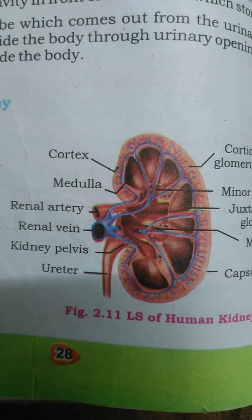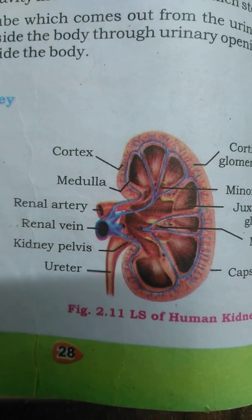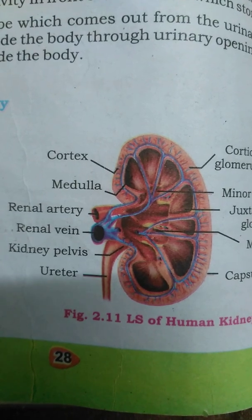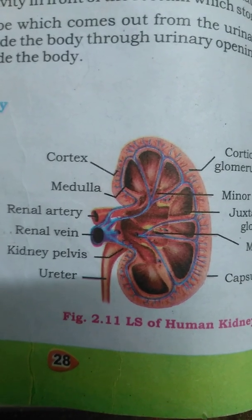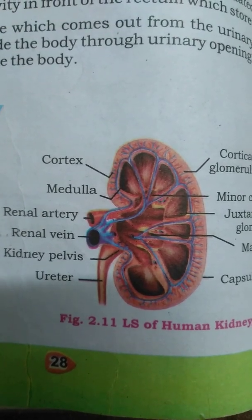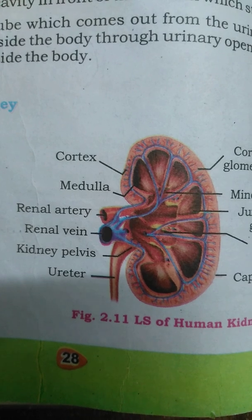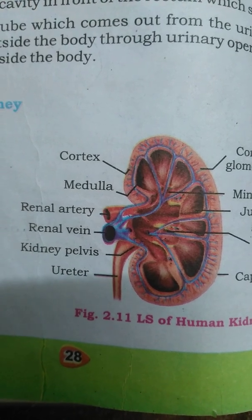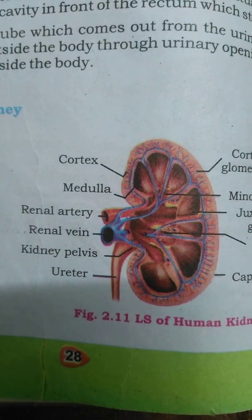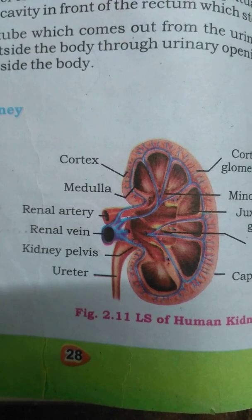The next part is the pelvis. The pelvis connects the kidney to the ureter and is the enlarged portion of the ureter inside the kidney.